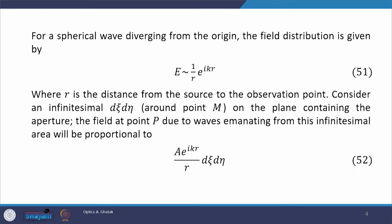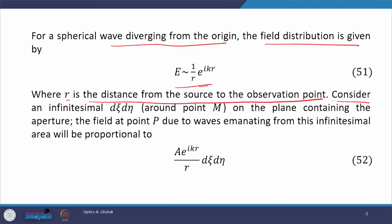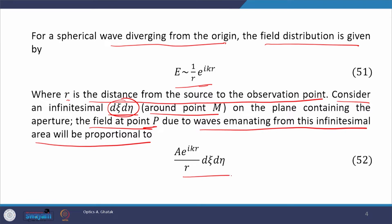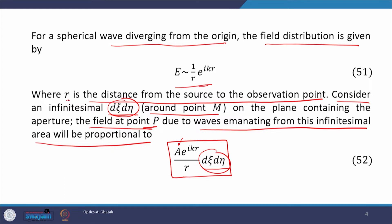In the aperture plane we have a small area element m, and out of this area element a spherical wave will emerge. For a spherical wave diverging from the origin, the field distribution is given by E ≈ (1/r) e^(ikr), where small r is the distance from the source to the observation point. Around point m we have considered an infinitesimal area element d-zeta times d-eta. The field at the point of observation p due to the wave emanating from this infinitesimal area will be proportional to A e^(ikr)/r d-eta, where A is the amplitude of the incident plane wave.